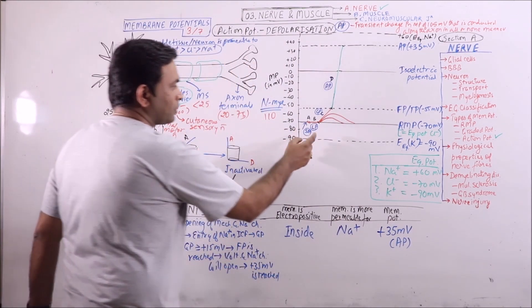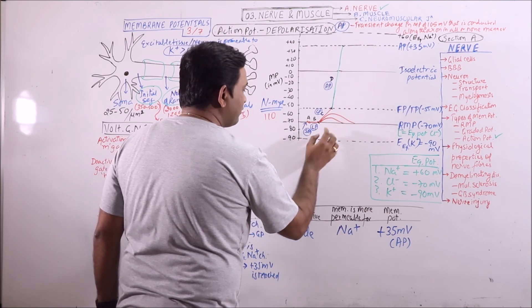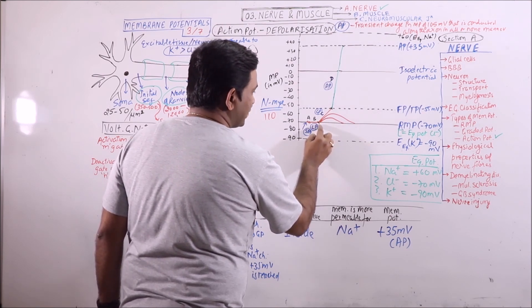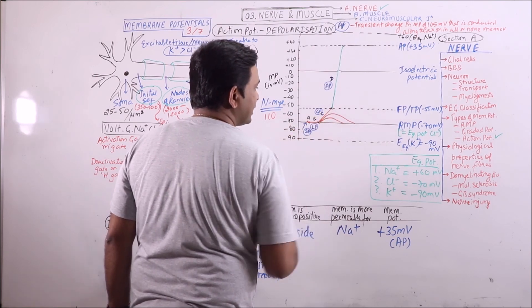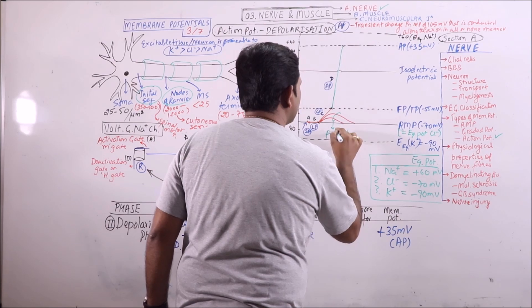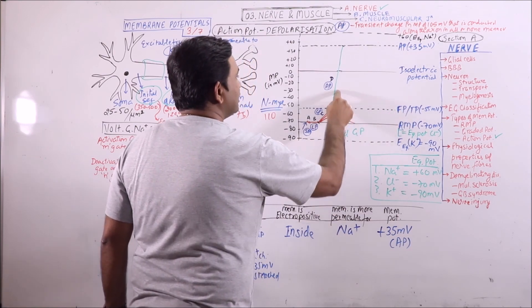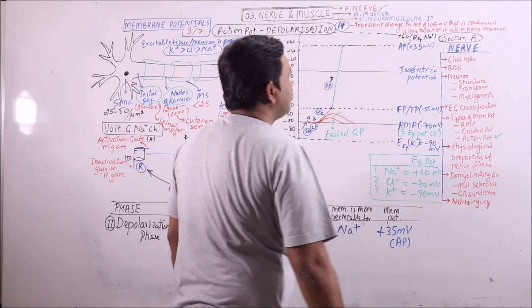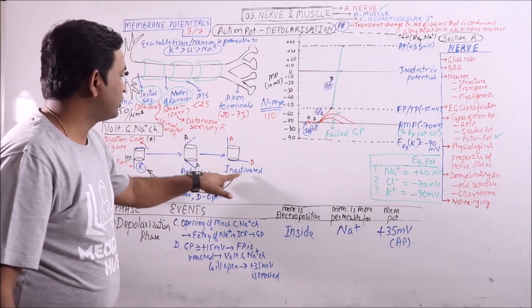To revise: a stimulus is given, that will lead to minor fluctuations — the stimulus artifact. Then a phase of no fluctuation — the latent period. Then some mechanical gated or ligand-gated sodium channels open, leading to entry of sodium into the cell, which results in development of graded potential. If graded potential is less than plus 15 millivolts, that results in failed graded potentials. If it crosses the plus 15 millivolt barrier — that is, reaches the firing potential — then voltage-gated sodium channels will open, leading to rapid depolarization of the cell, reaching plus 35 millivolts. It will not go beyond that because auto-inactivation of voltage-gated sodium channels will occur, which is why it stops at plus 35 millivolts and does not reach the equilibrium potential of sodium, which is plus 60 millivolts.